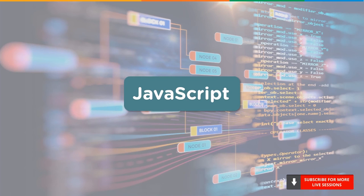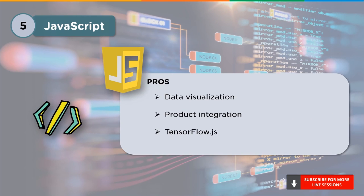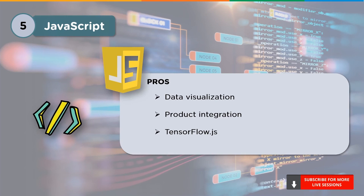At number 5, we have JavaScript. Developed by Brendan Eich in 1995, JavaScript is a server-side and client-side programming language that offers a wide range of libraries and frameworks. Moving on to pros for data science: first up is data visualization — JavaScript offers libraries such as d3.js, chart.js, plotly.js and many others for powerful data visualization. Next is product integration: companies use web technologies with a node-based approach for their core product, which is why JavaScript is widely used.